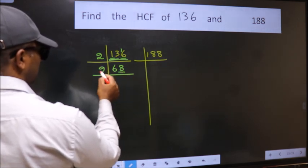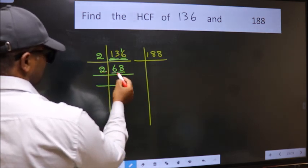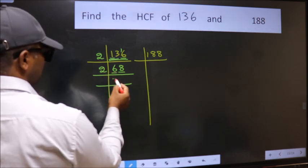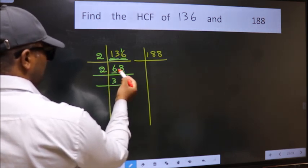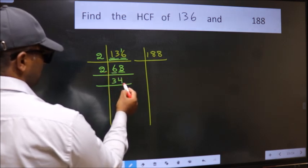Last digit 8, it's even, so take 2. First number 6. When do we get 16 in 2 table? 2×3 is 6. The other number 8. When do we get 8 in 2 table? 2×4 is 8.